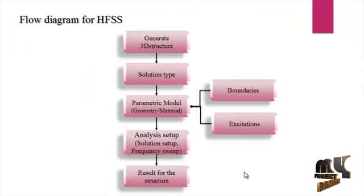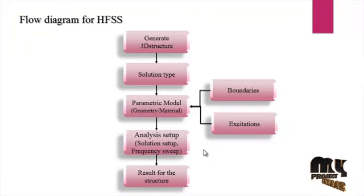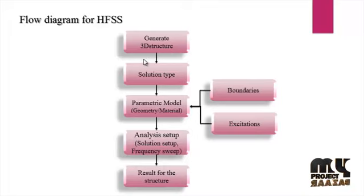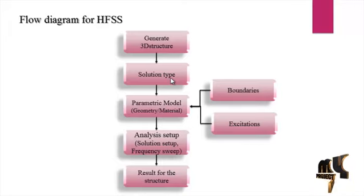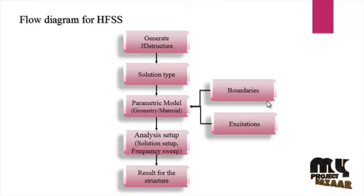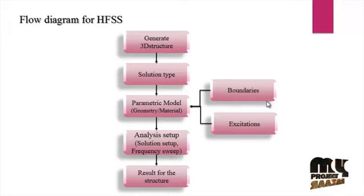Let us discuss about the flow diagram of the HFSS process. In HFSS there is a 3D structure using X, Y, Z axes. First, generate a 3D structure, then set a solution type. In the solution type process there are two solution types: driven terminal and driven modal. Then a parametric model — whatever design it may be, we will design it. Here we are using the van shape design and applying boundaries. For boundaries, we are using perfect E and perfect H — perfect E for the electric field and perfect H for the magnetic field.